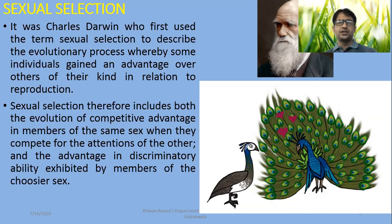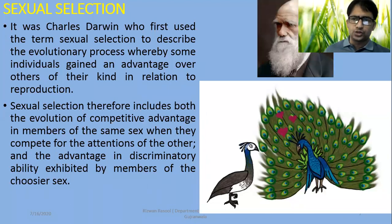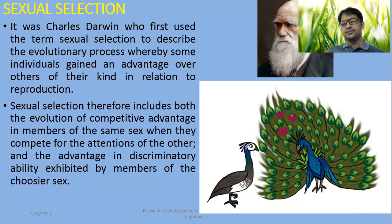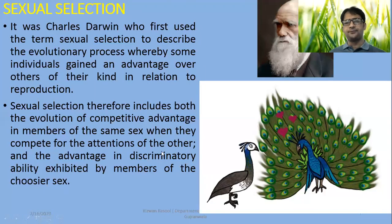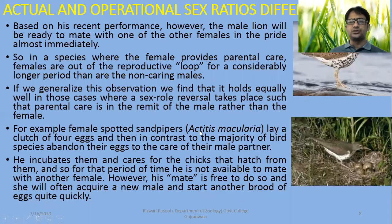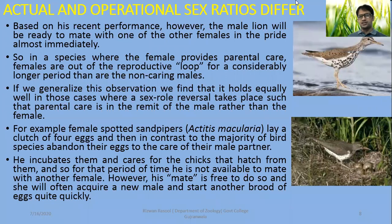In the previous example, females play the role of the choosier sex. In most cases, males show courtship displays — as you can see on the right side of the picture. A peahen selects a peacock with a larger and more beautiful wing pattern. In this case, the female chooses, and the courtship or attraction displays come from the male's side. That is why the actual and operational sex ratios also differ in groups of animals.